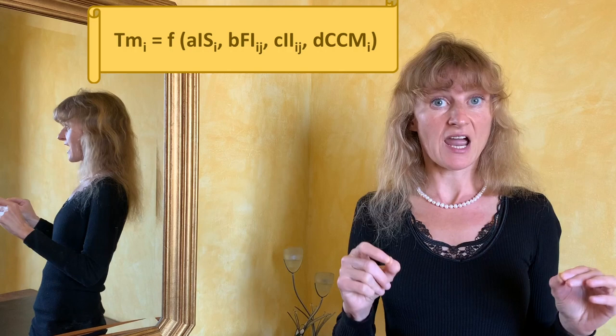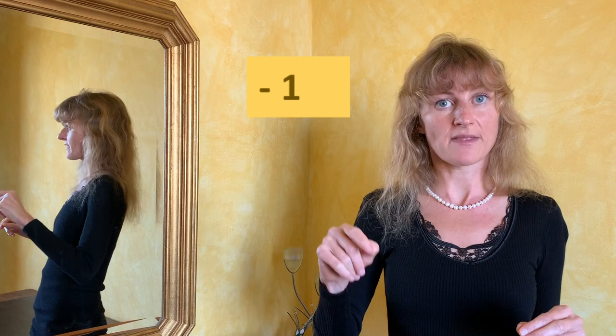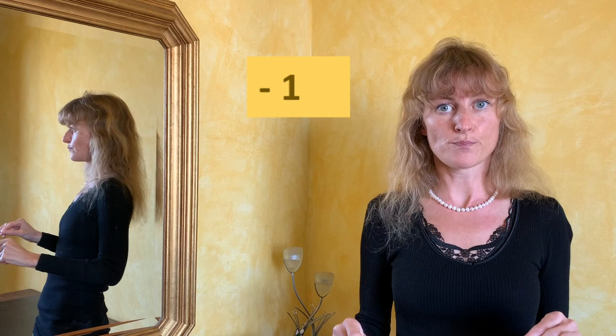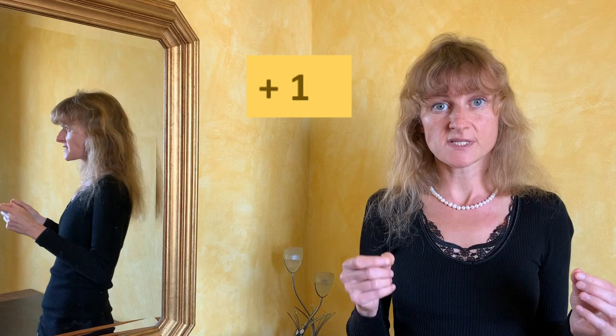So, if the letters take a minus one value, this means that the particular variable has a negative impact on the moral content of the transaction and usually it will be compensated by other variables. On the contrary, plus one means that the variable has a positive impact on the moral dimension of the company.